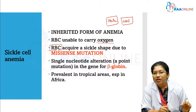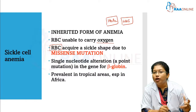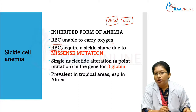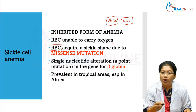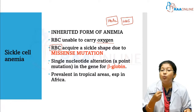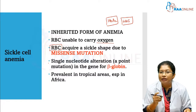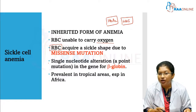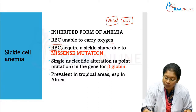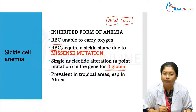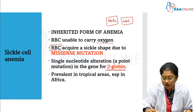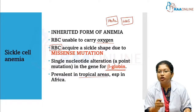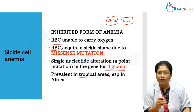These RBCs acquire a sickle shape due to missense mutation. In missense mutation, there is a point mutation — a single nucleotide alteration in the gene for beta globin. Sickle cell anemia is prevalent in tropical areas, especially in Africa.